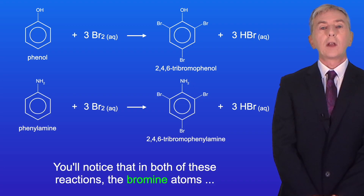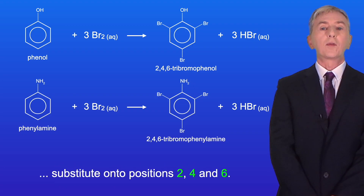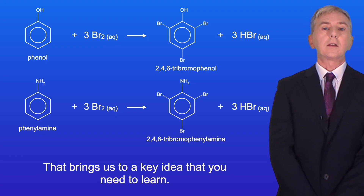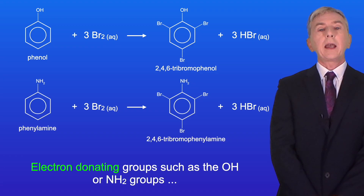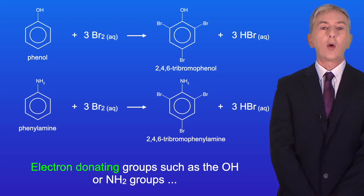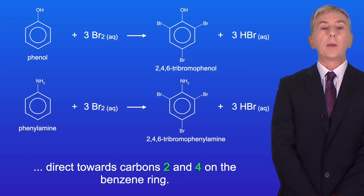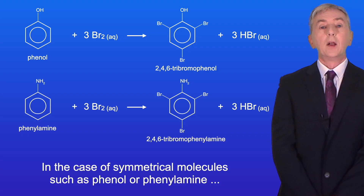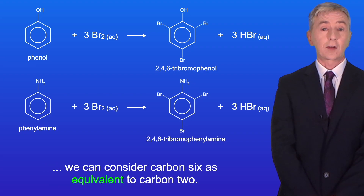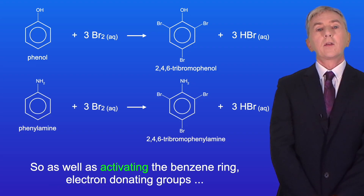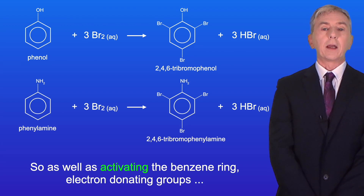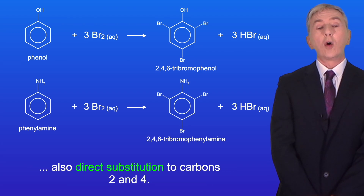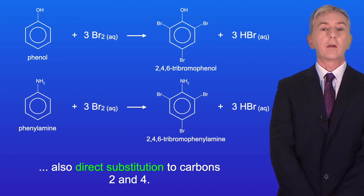You'll notice that in both of these reactions, the bromine atoms substitute onto positions 2, 4 and 6. This brings us to a key idea: electron donating groups, such as the OH or NH2 groups, direct towards carbons 2 and 4 on the benzene ring. In the case of symmetrical molecules such as phenol or phenylamine, we can consider carbon 6 as equivalent to carbon 2. So as well as activating the benzene ring, electron donating groups also direct substitution to carbons 2 and 4.